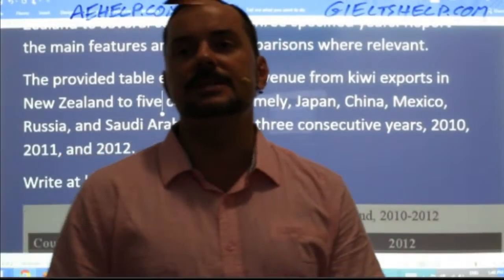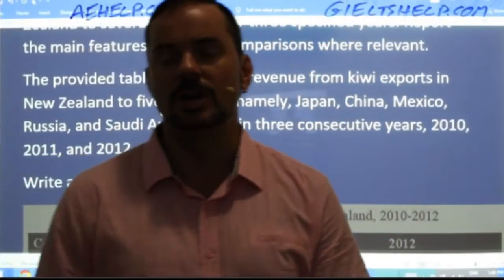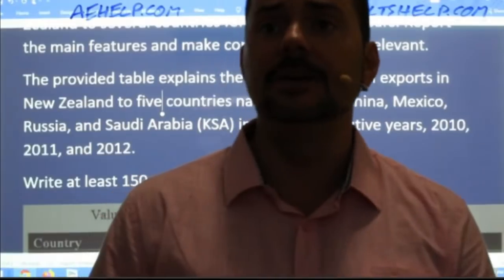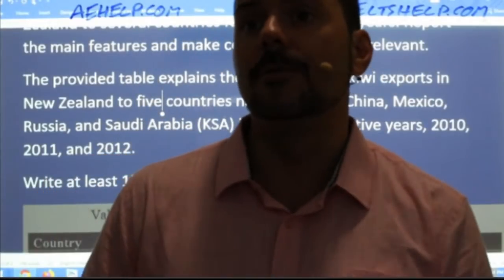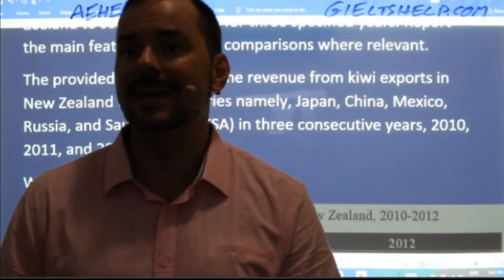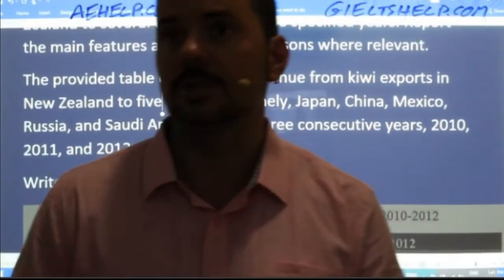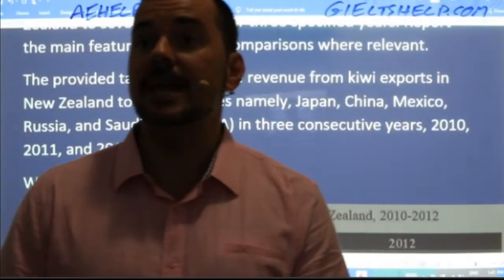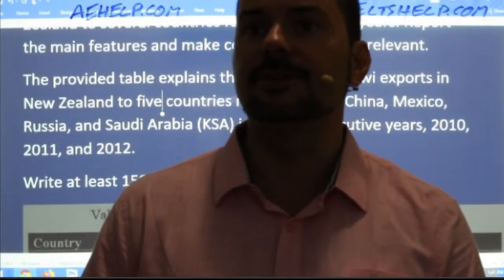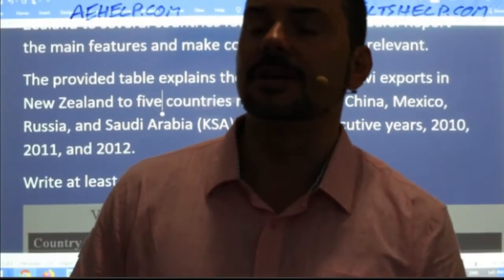Bekjan wrote: 'The given table depicts the amount of money generated by exporting kiwi fruits from New Zealand to five different countries — Japan, China, Mexico, Russia — but be careful, UAE is not correct here, Bekjan. It's KSA, Kingdom of Saudi Arabia, not UAE. Abhishek wrote: 'The given spreadsheet compares the trade of kiwi fruit exports from New Zealand to Japan, China, Mexico, Russia, and Saudi Arabia KSA in 2010, 2011, and 2012.' Good, Abhishek.